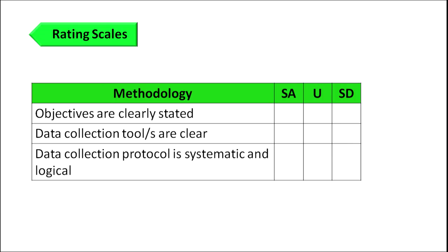Rating scales rate performance on a continuum from positive to negative. For example: objectives are clearly stated — if they are, you would say strongly agree; if not, strongly disagree; or if you are undecided, mark undecided. Rubrics are different from both rating scales and checklists.